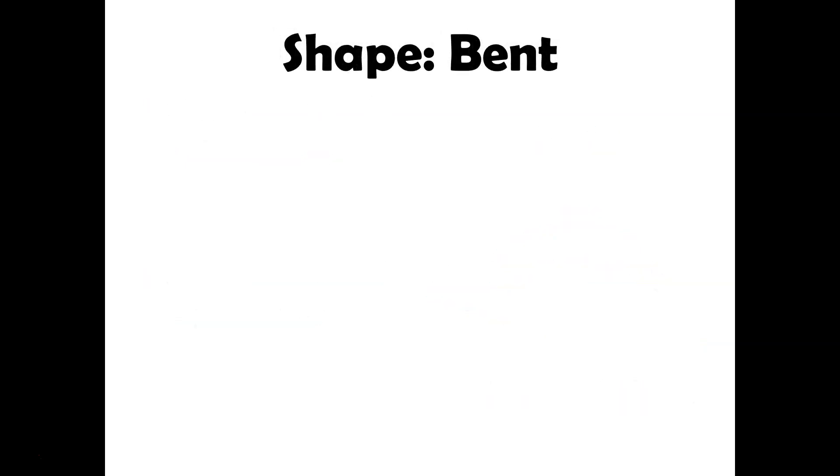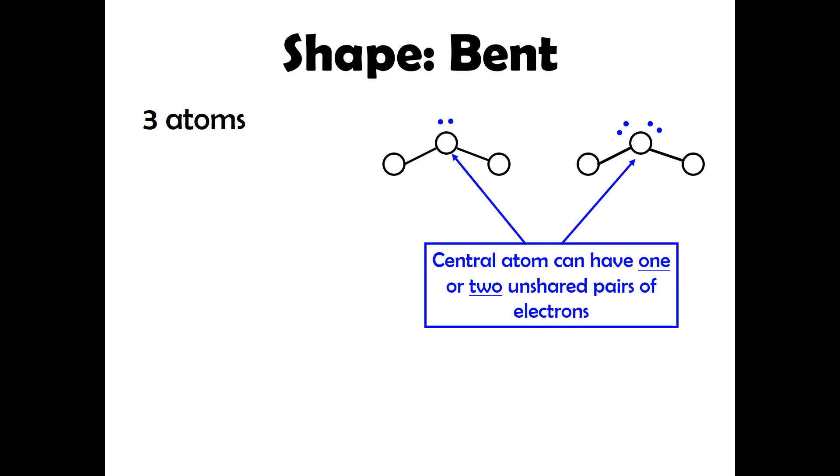The next shape is bent. And that's exactly what it sounds like. Typically, you'll have three atoms where you'll basically have it kind of bent over like you see there. Now, in order to make this bent shape, you have to have these unshared pairs around the central atom. So if you don't have those unshared pairs, then again, there's nothing going to keep it from repelling and kind of forming that straight line. So you have to have them there in order to cause it to be bent. You can have one unshared pair or you can have two.